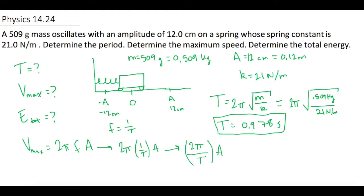So now, since we solved for T, we can plug that in. We have 2π divided by 0.978 seconds times the amplitude of 0.12 meters. When we plug that into our calculator, it gives us a maximum speed of 0.771 meters per second.